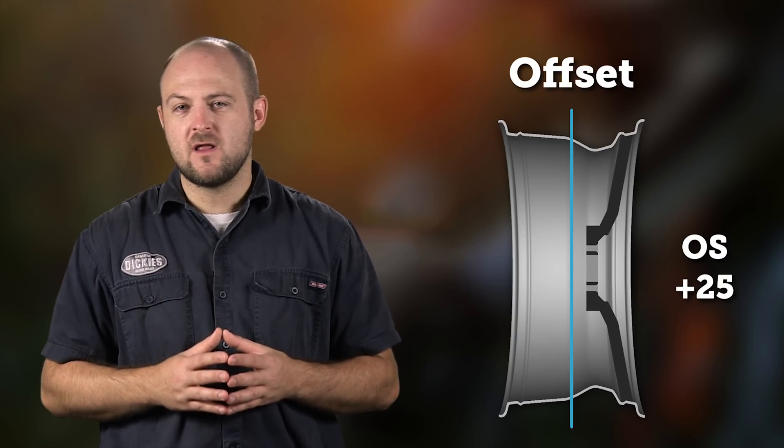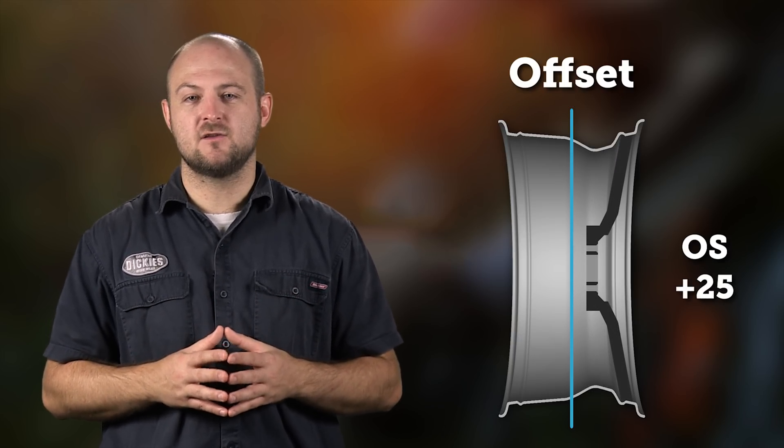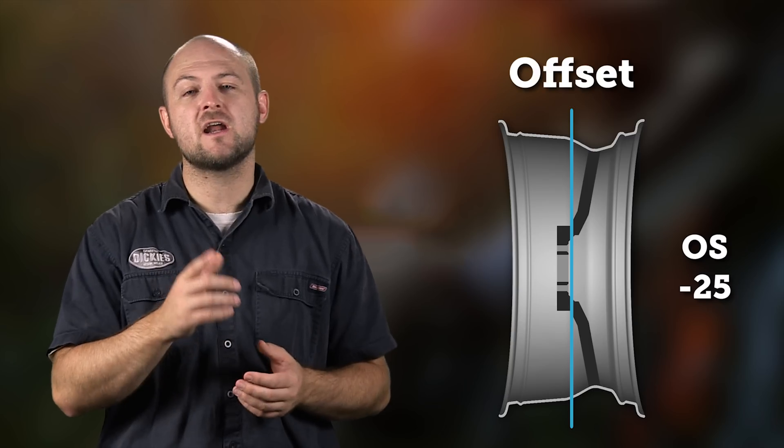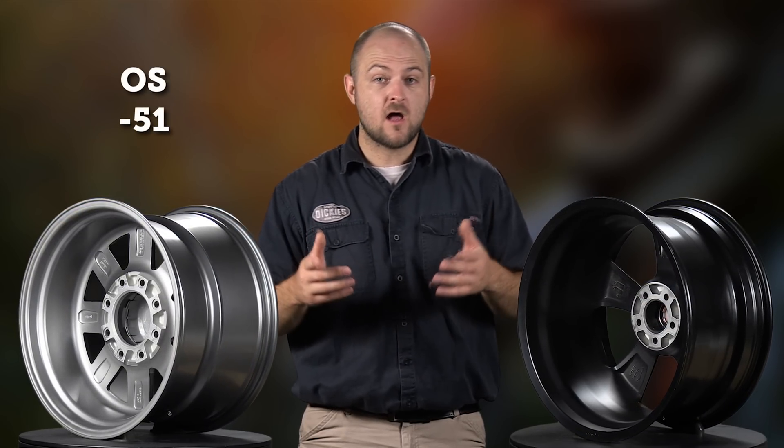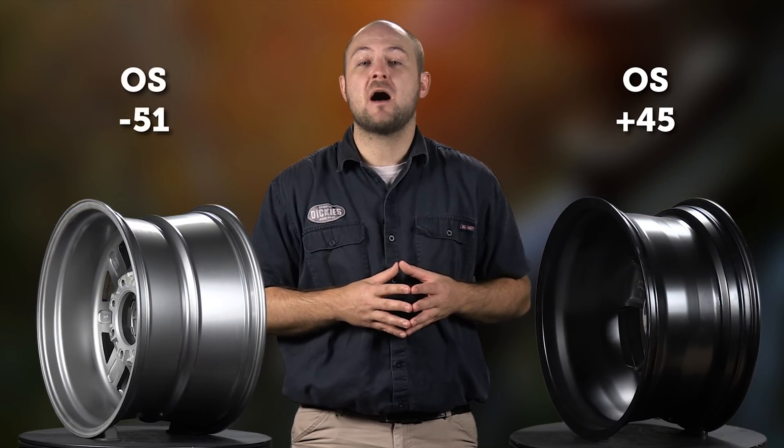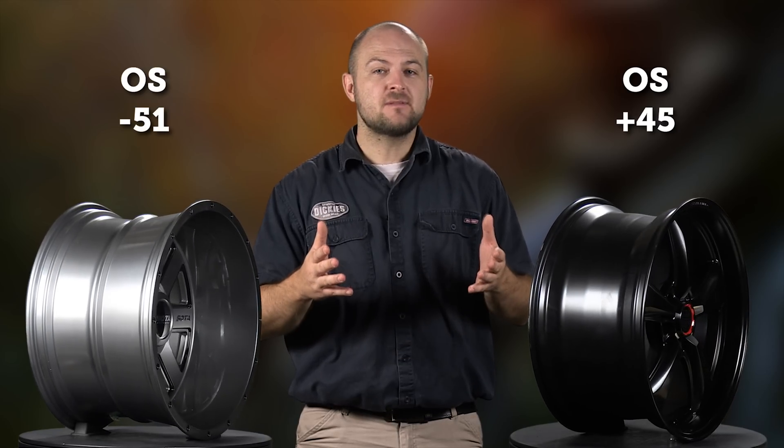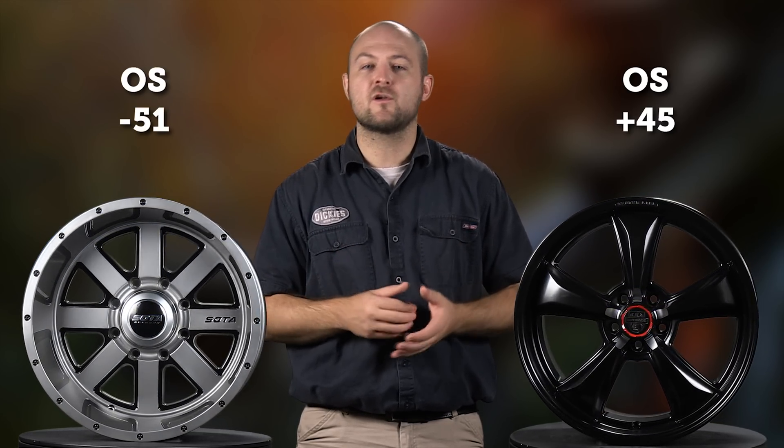But move the mounting surface forward and you'll have a positive offset. Do the same thing but move it inward and you're going to have a negative offset. Offset is measured in millimeters from the centerline, so this wheel has a negative 51mm offset while this wheel has an offset of positive 45mm. Sometimes you'll see this stated as ET45 depending on the source of the info for your wheel.